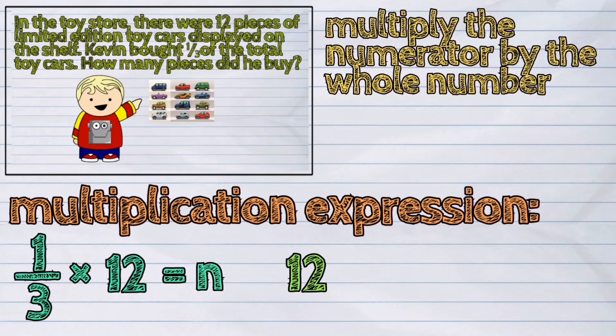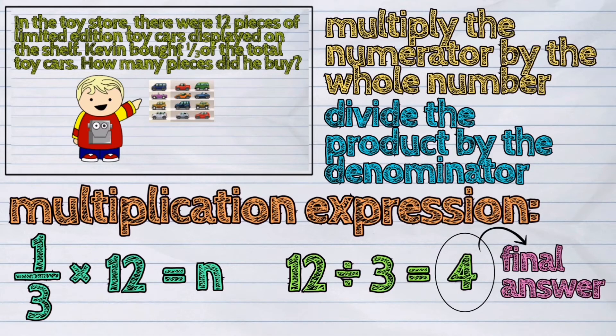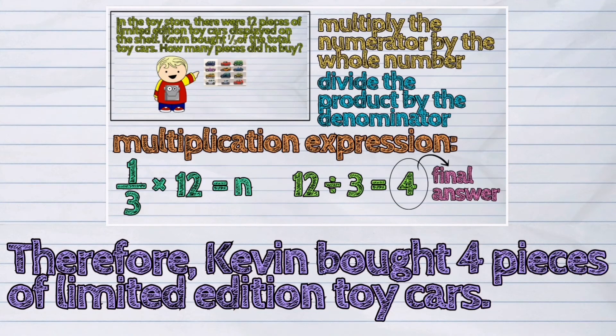Next, divide the product by the denominator. Our product is 12, so it's 12 divided by 3. This is equal to 4. 4 is our final answer. Therefore, Kevin bought 4 pieces of limited-edition toy cars.